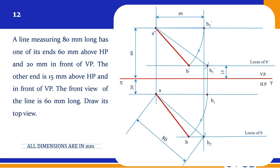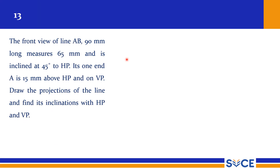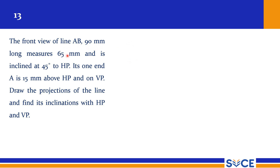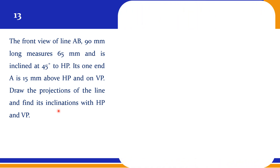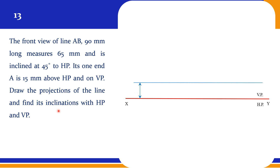We will see one more problem of this kind — Problem 13. The front view of line AB, 90mm long, measures 65mm. So the true length is 90mm and the front view is 65mm, inclined at 45 degrees to HP. Its one end A is 15mm above HP and on VP. Draw the projections of the line and find its inclinations with HP and VP — so we need to find alpha and beta.